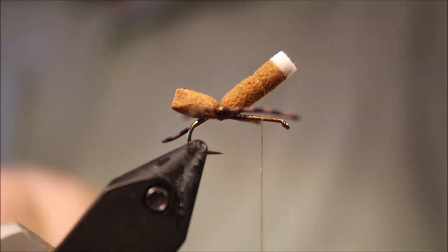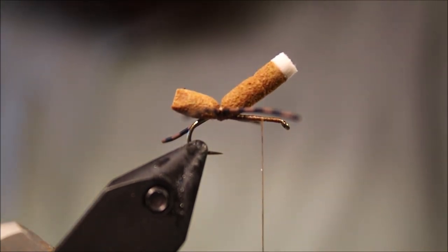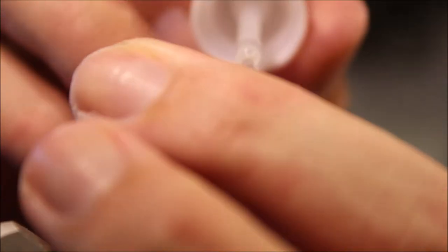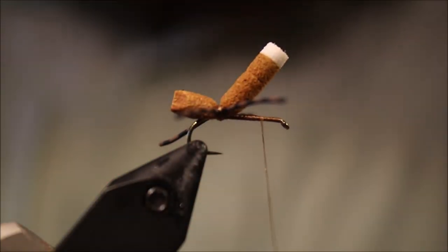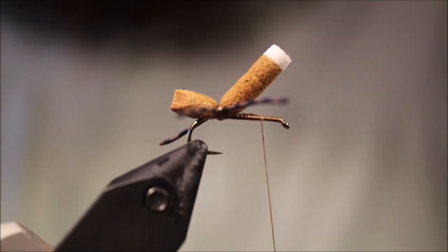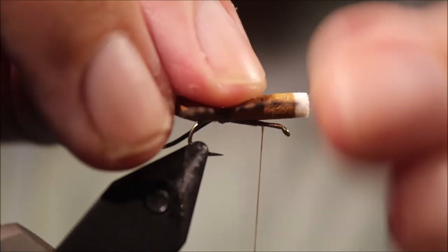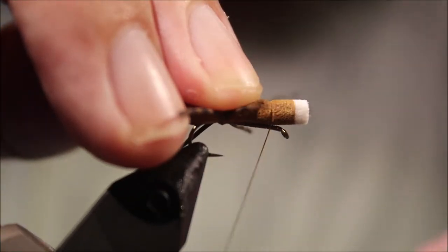Then I'll get my super glue, push everything out the way, and I'll just touch the super glue onto the thread very lightly. Make sure you don't get any in your rubber legs. Take that loose wrap again.